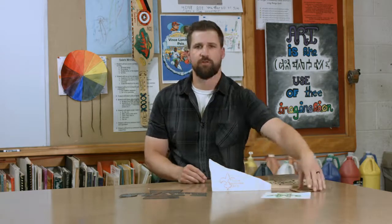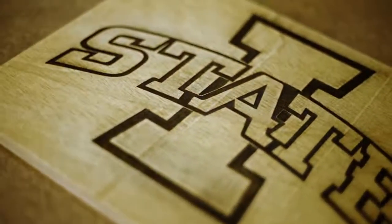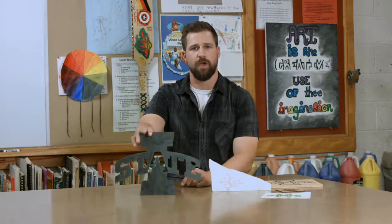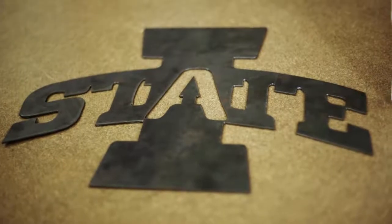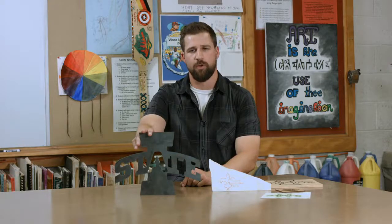We have a laser engraver system that will actually take an image that we create in something like Illustrator or Photoshop and then engrave that into a piece of wood or a piece of stone, even glass. And we work with a plasma cutter that will actually make complete cuts into a sheet of metal, and we've used this to do a lot of different designs for signs and different projects like that around the community.